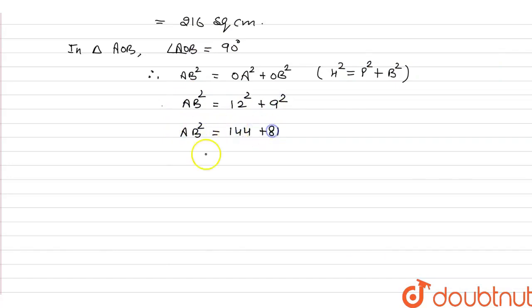AB square is equal to 225. Therefore, AB is 15 centimeter. That means sides of rhombus are of length 15 centimeter.